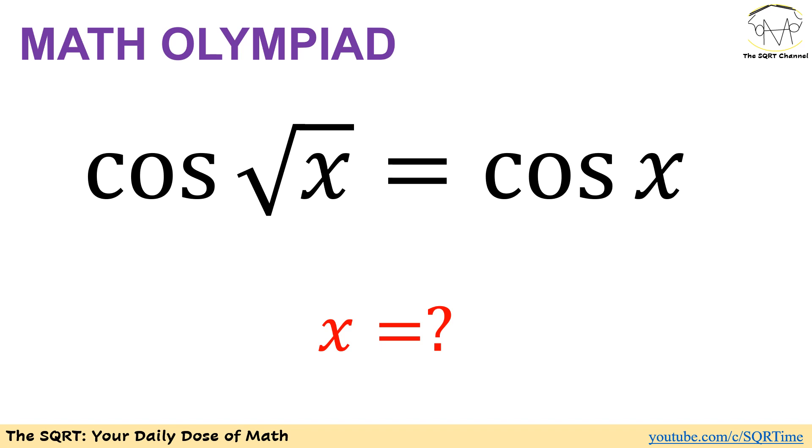We have cosine of radical x equals to cosine of x and we are going to find all possible values that we can have for x. Before moving forward to talk about the solution, make sure that you pause the video to think about this problem and we will see you in about 15 seconds.